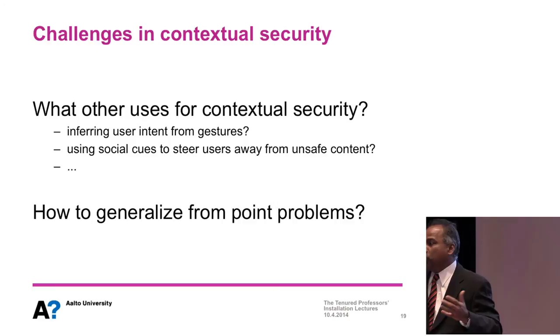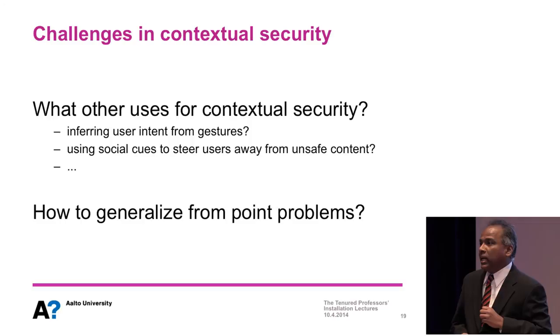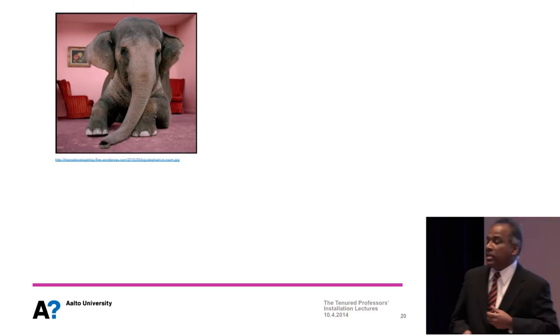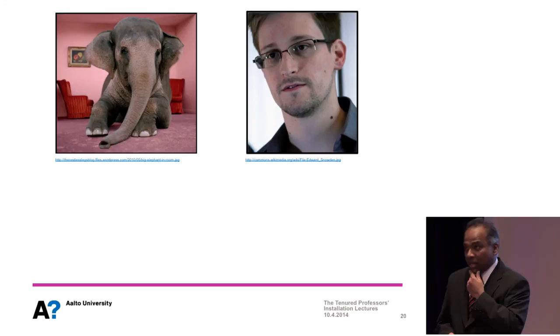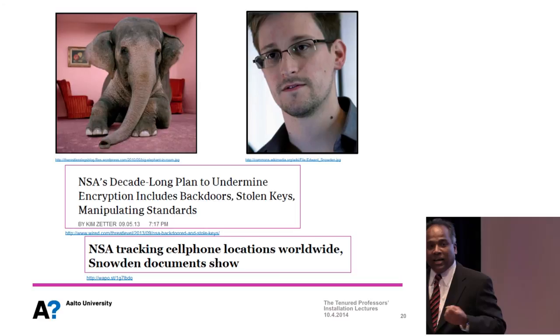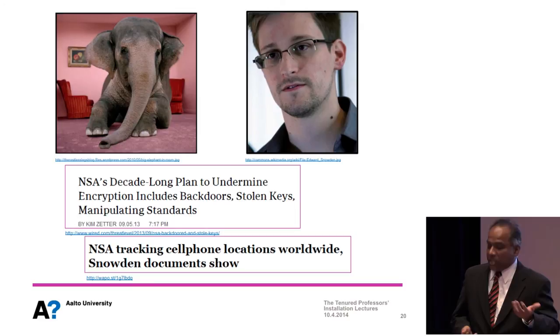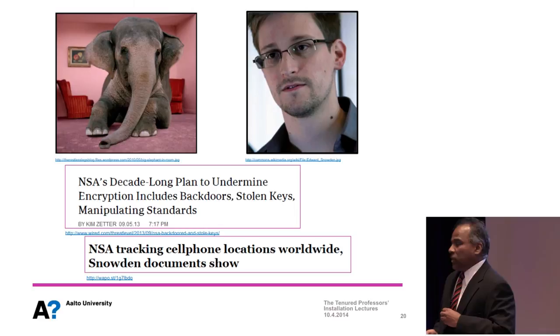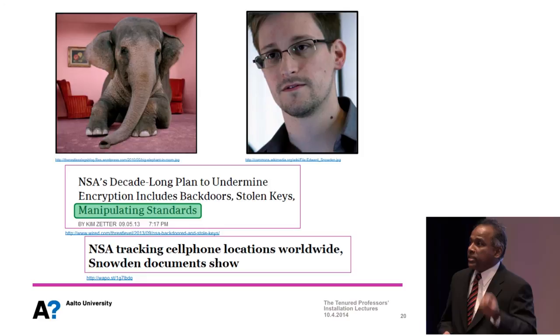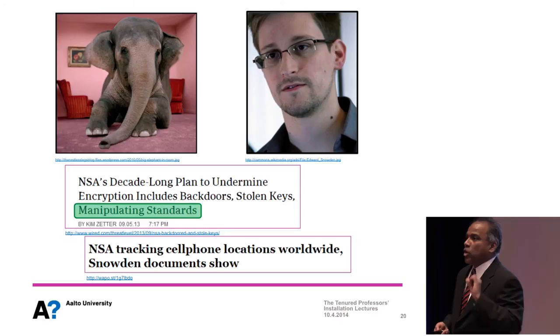There are several other open issues, including how to generalize from these specific problems to a more general model. Before I close, I want to address the elephant in the room: if someone talks about information security today, they have to address the revelations made by Edward Snowden over the past year. These are serious and have profound consequences for the profession as a whole. Some were known and suspected, such as certain agencies having surveillance capabilities. Others — like the fact that open standards processes may have been manipulated — came as a surprise to many people.